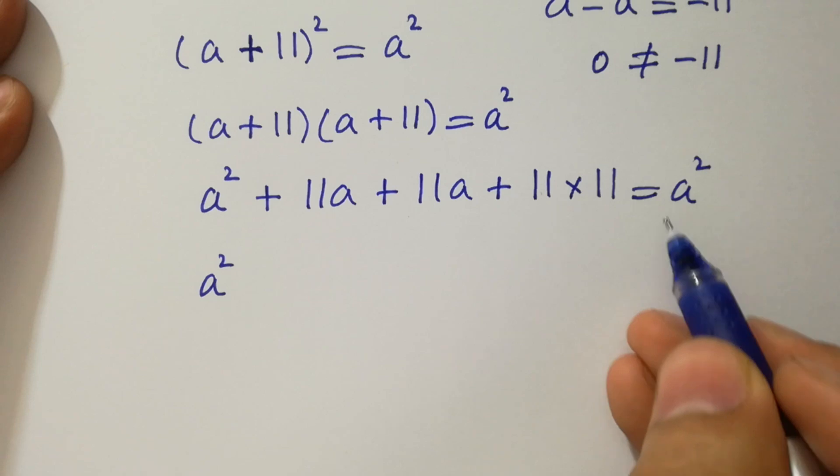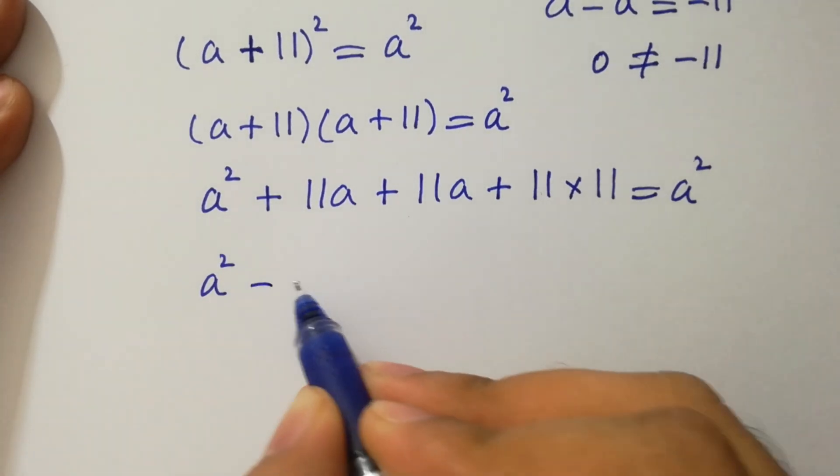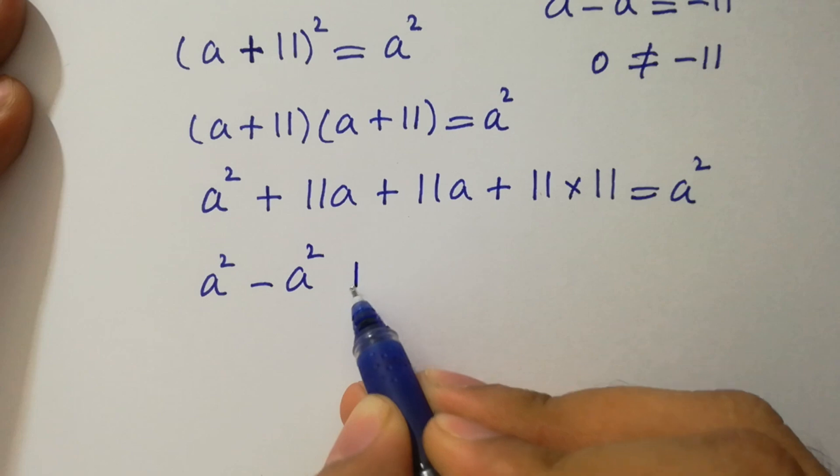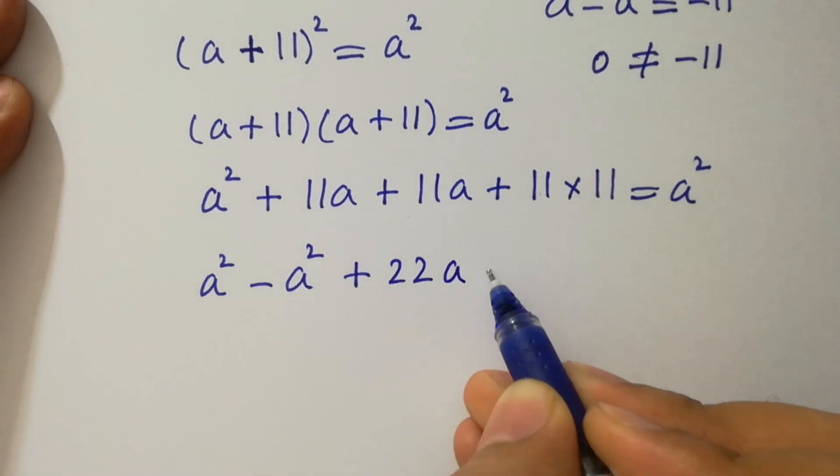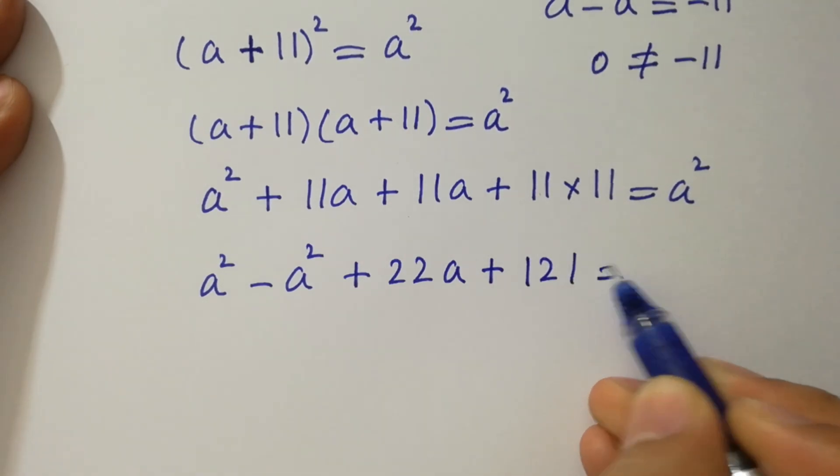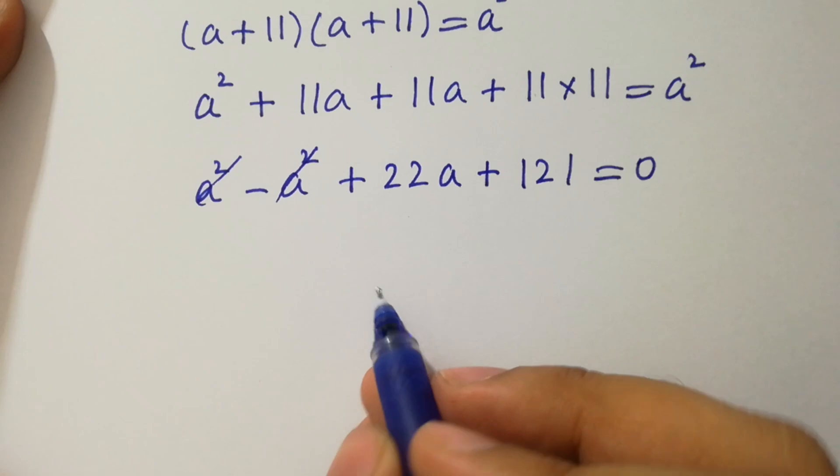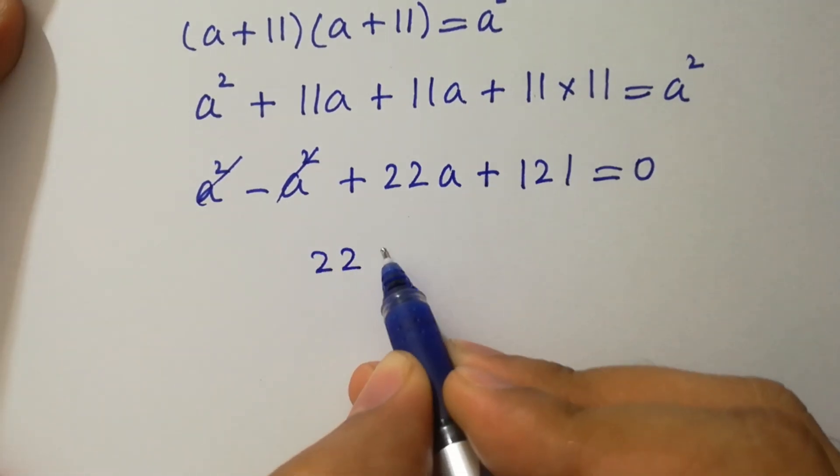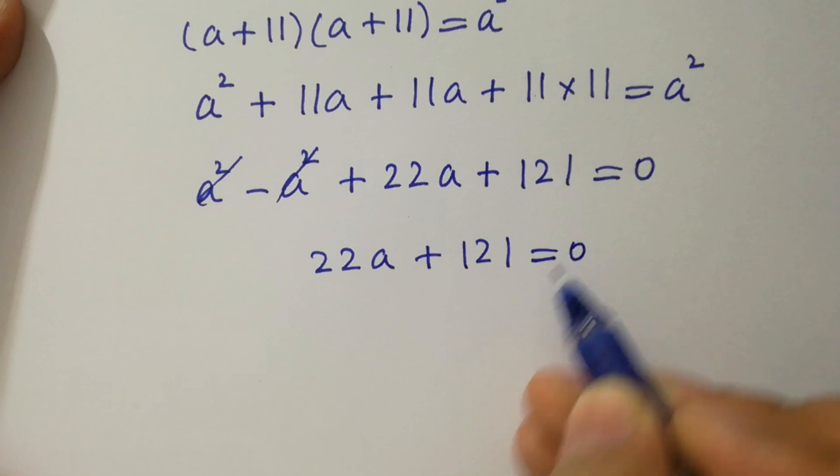A square on left hand side will be minus a square plus 11a plus 11a will be 22a plus 11 times 11 is 121 equal to 0. Where a square cancels, we have 22a plus 121 equal to 0.